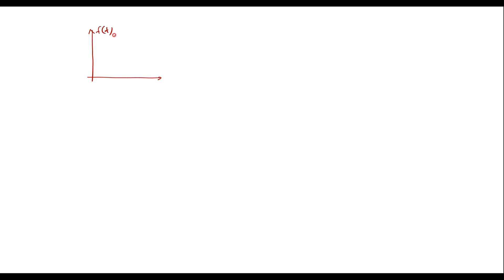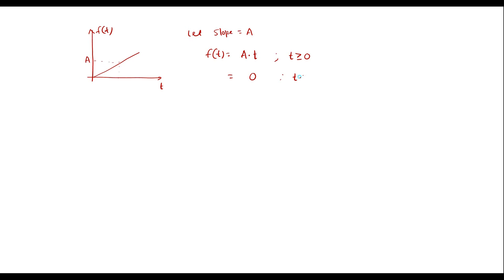Suppose the ramp signal f of t has a slope equal to a. Then f of t is represented as f of t equal to a times t, for t greater than or equal to 0, and 0 for t less than 0. In this case the Laplace transform of f of t will be equal to a by s squared. One should remember this result.